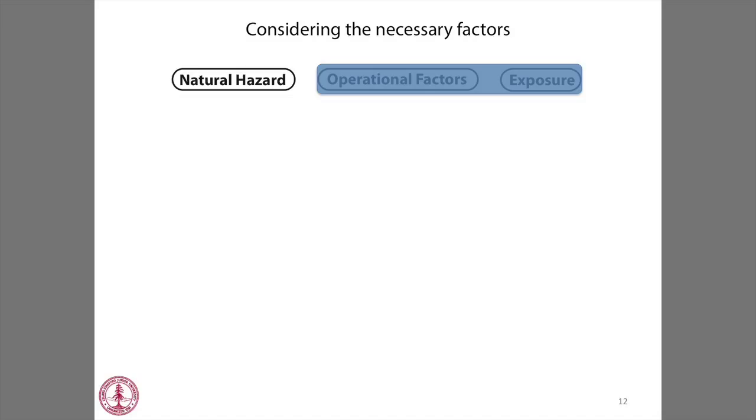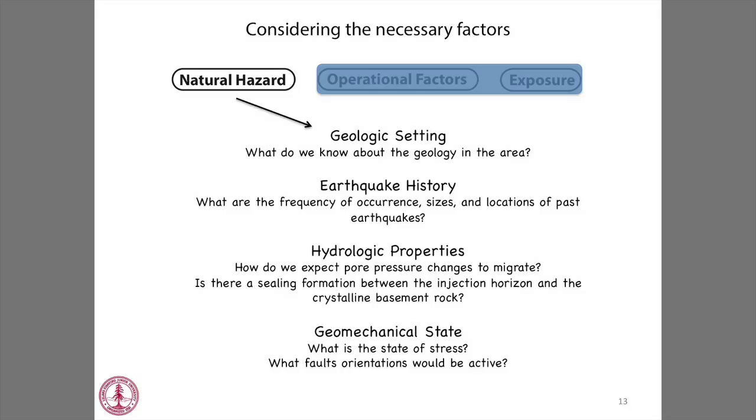Looking at natural hazard factors: first is the geologic setting — what we know about the geology, formations, porosity and permeability, as well as earthquake history including frequency, sizes, and ground motions of past events. Hydrologic properties help us understand how fluid will flow in the subsurface and whether a ceiling formation with low permeability exists between the injection zone and potentially dangerous faults in the crystalline basement. We also consider the geomechanical state — the stress state, which faults are present, and their orientations.